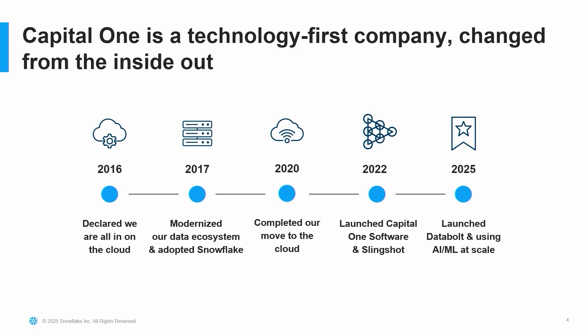Before we go into the agenda, let's take a minute and talk about Capital One. Those who know Capital One look at it as a financial institute, but we are a technology-first company. In 2017, we entirely rearchitected our data ecosystem on the cloud to manage data at scale and laid the foundation for AI/ML. In 2022, we launched Capital One Software, which offers solutions for data management capability. And our first product was Slingshot.